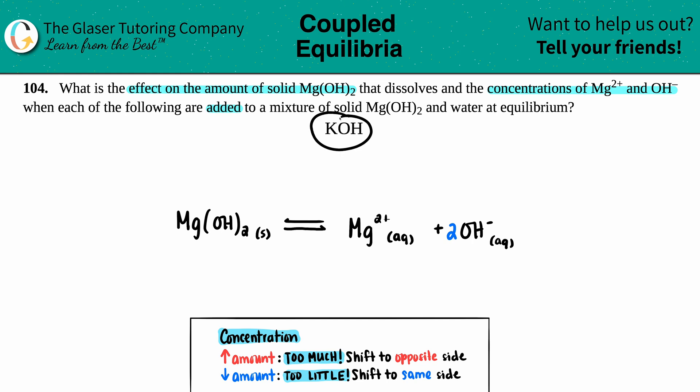Now remember, KOH, this is a strong base, right? Strong bases dissolve 100% of the time into its two ions. So we're adding KOH to this mix. Well, what are the ions for KOH? Well, it's got to be K+ and OH-.